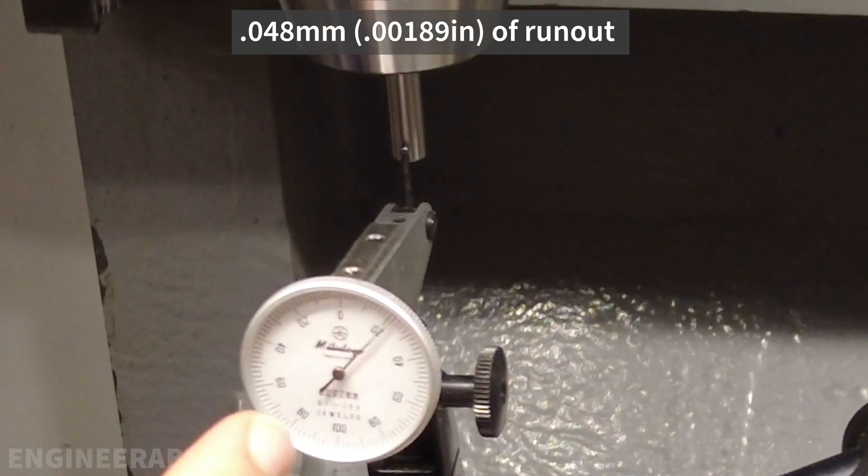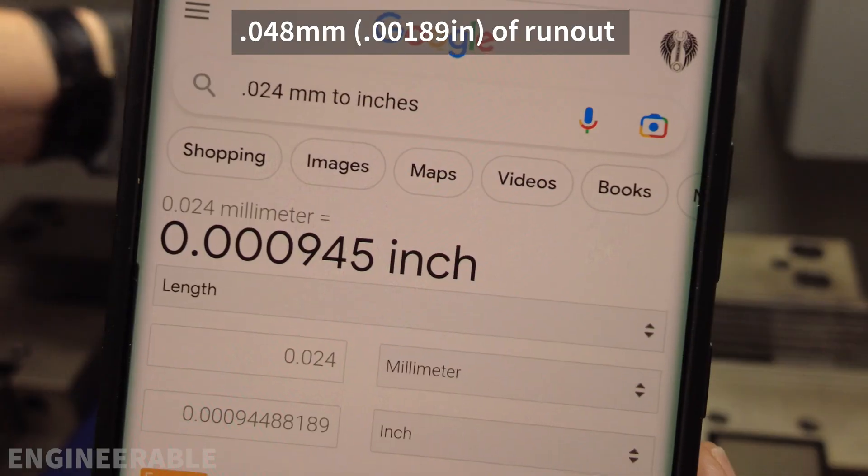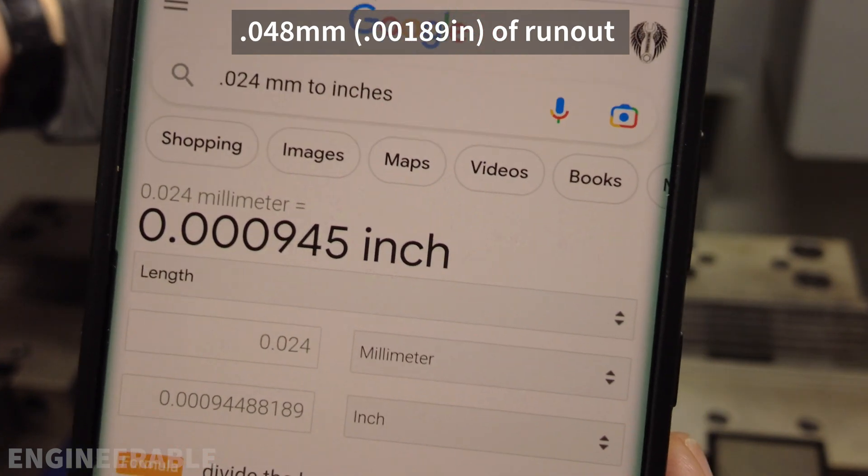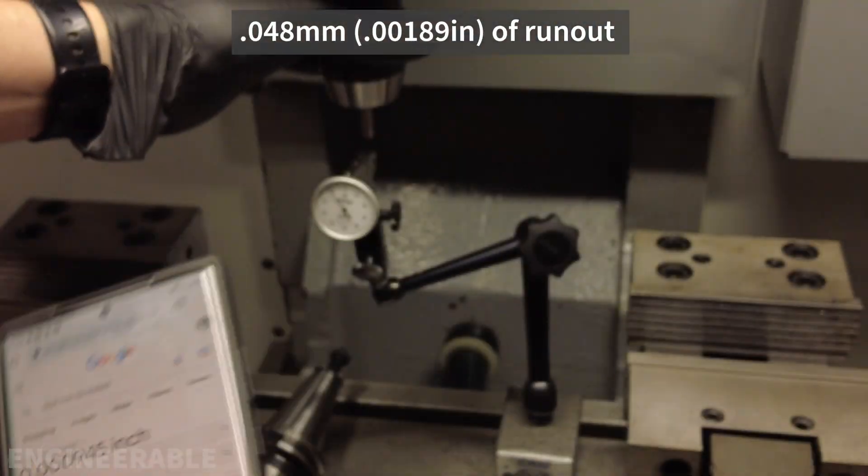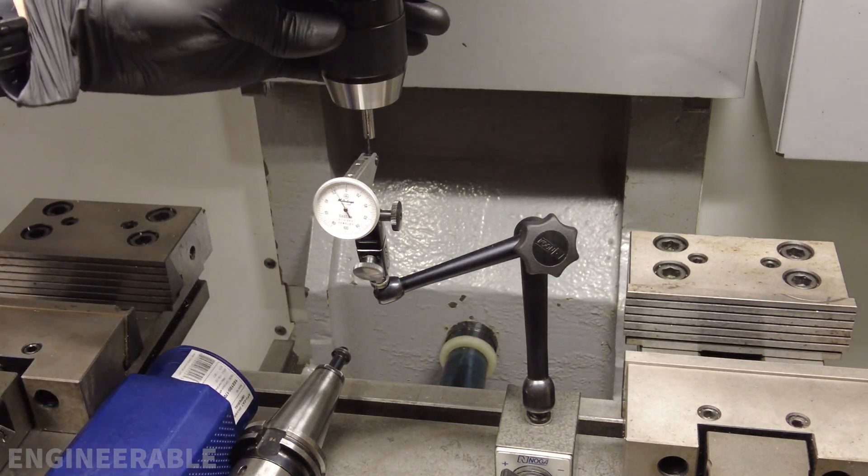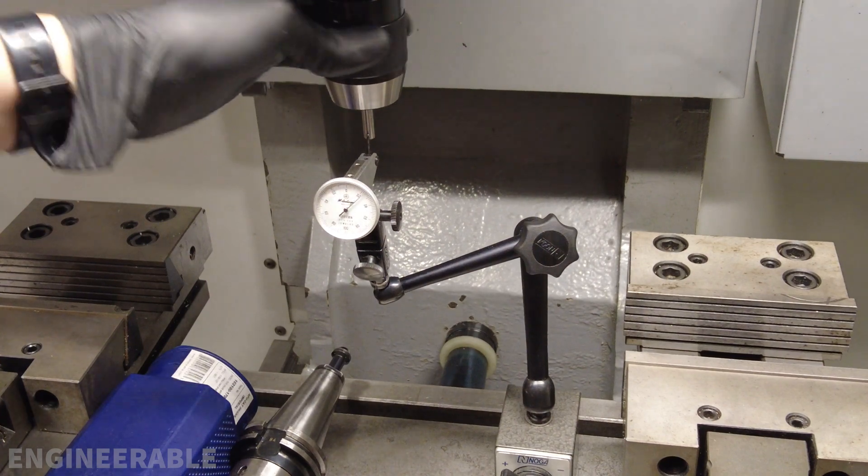So here I'm measuring plus or minus 0.024 millimeters of run-out. That is equivalent of 9.45 ten thousandths of an inch, so less than plus or minus one thousandths of an inch of run-out. I would say that's excellent for a keyless chuck at this price range. That is really good.